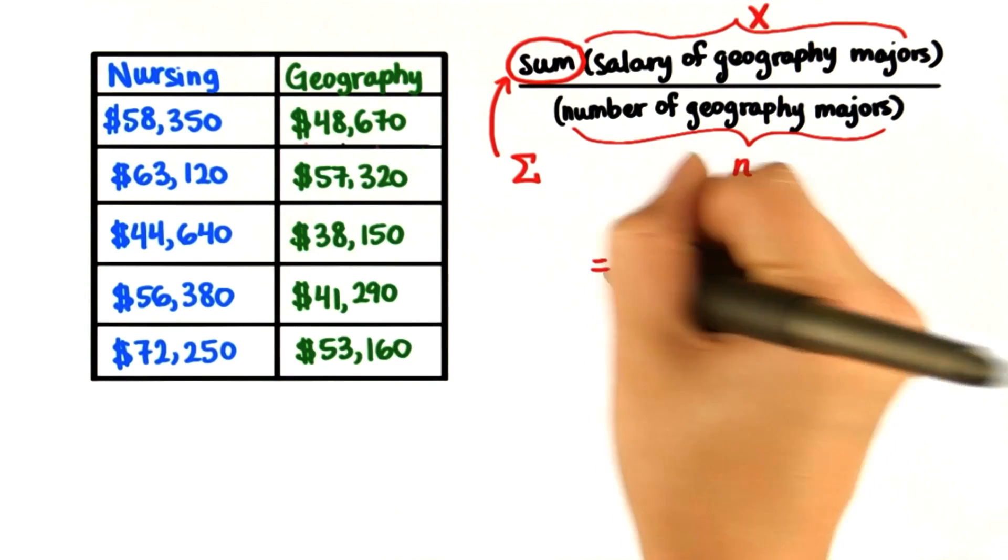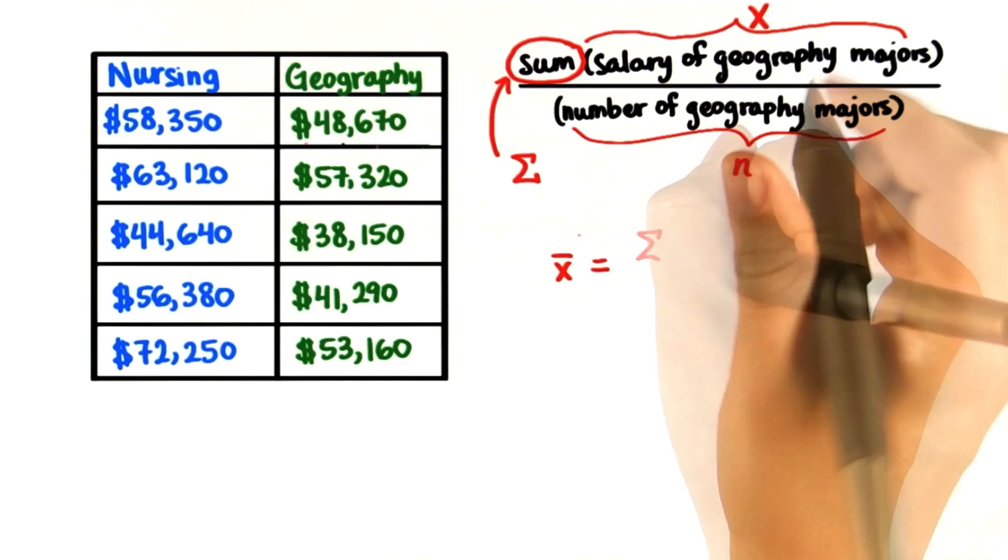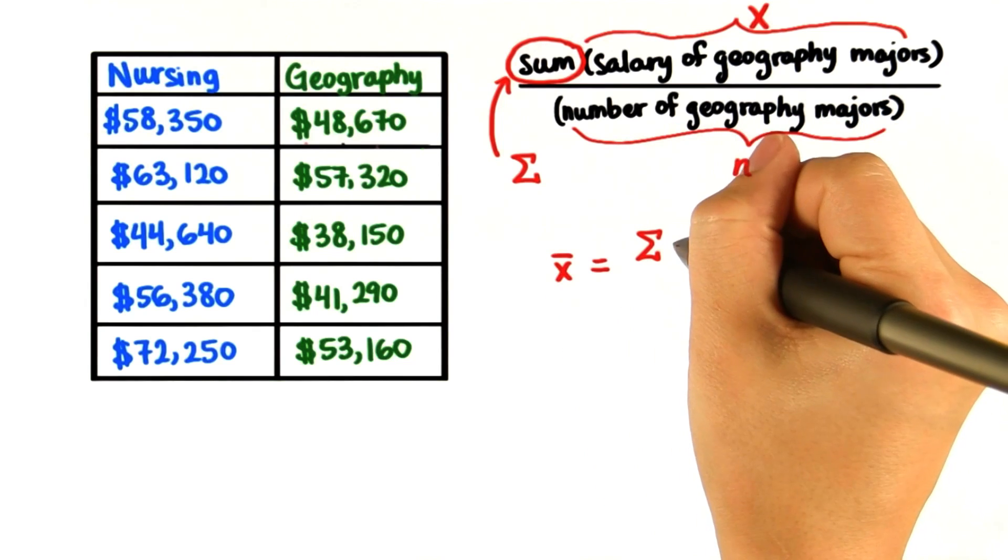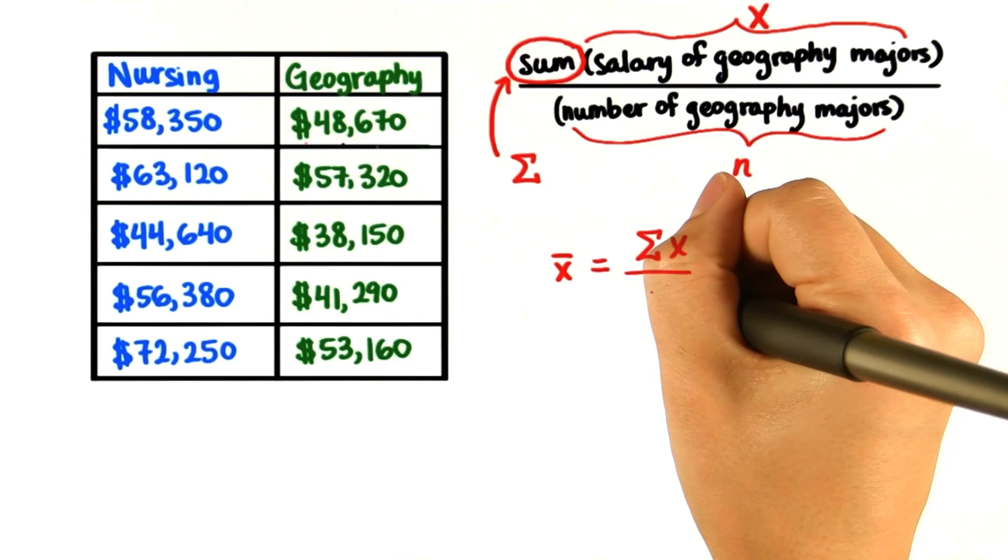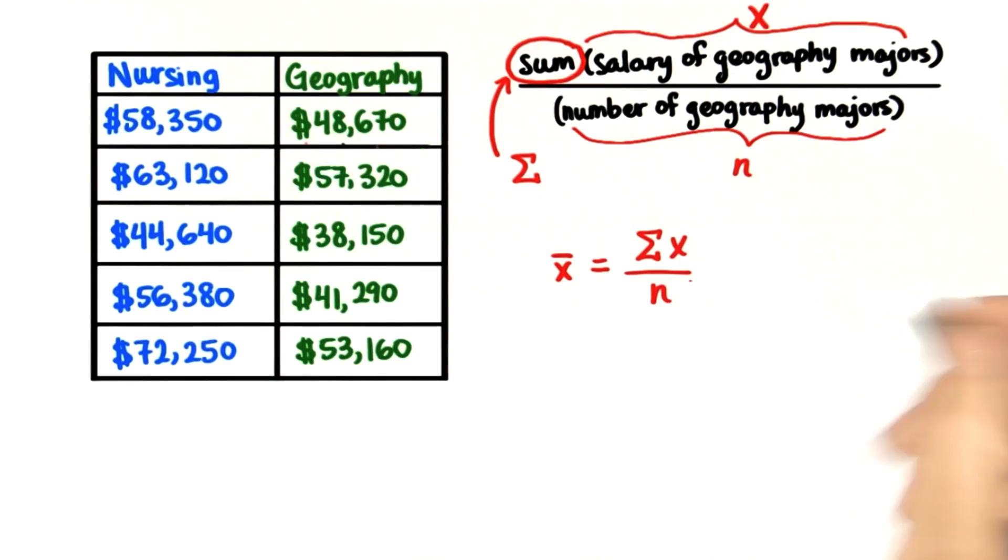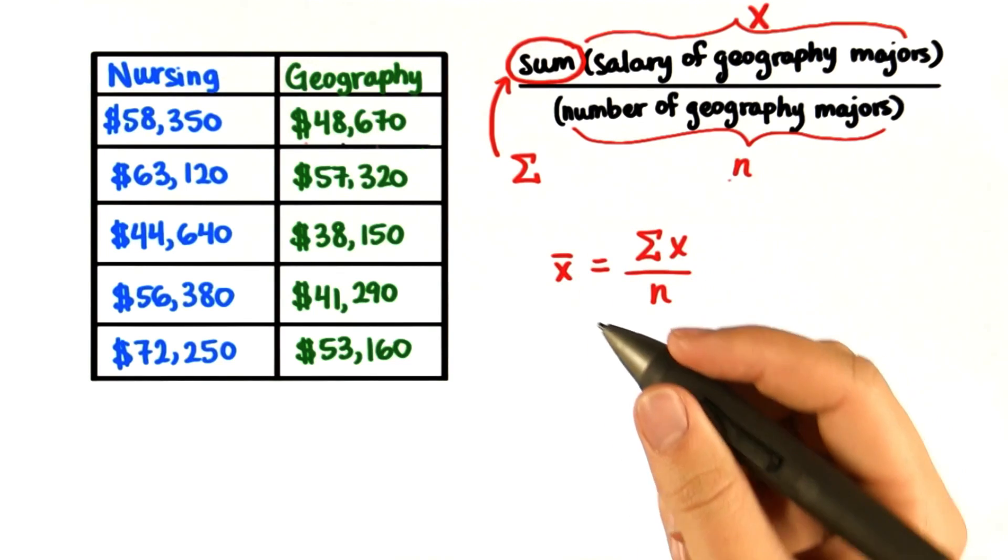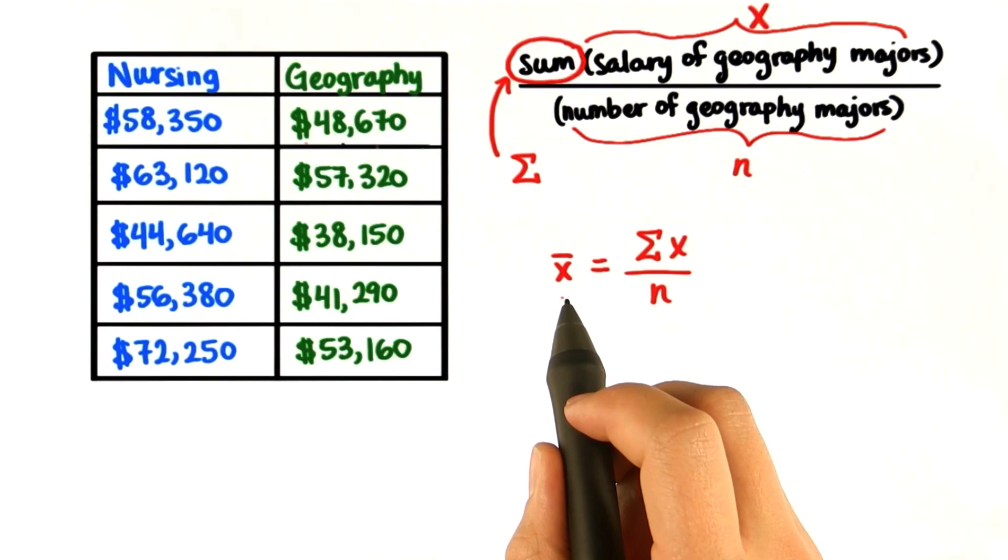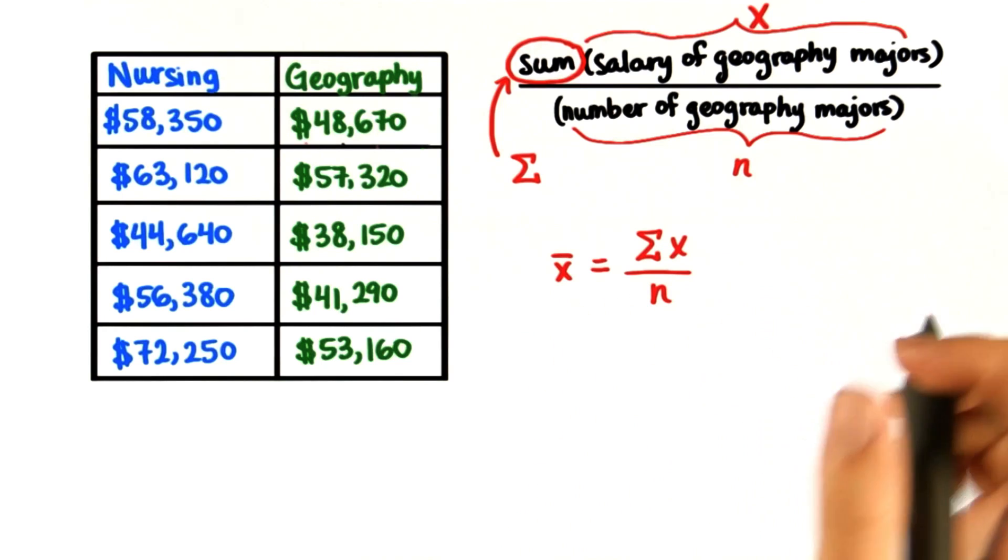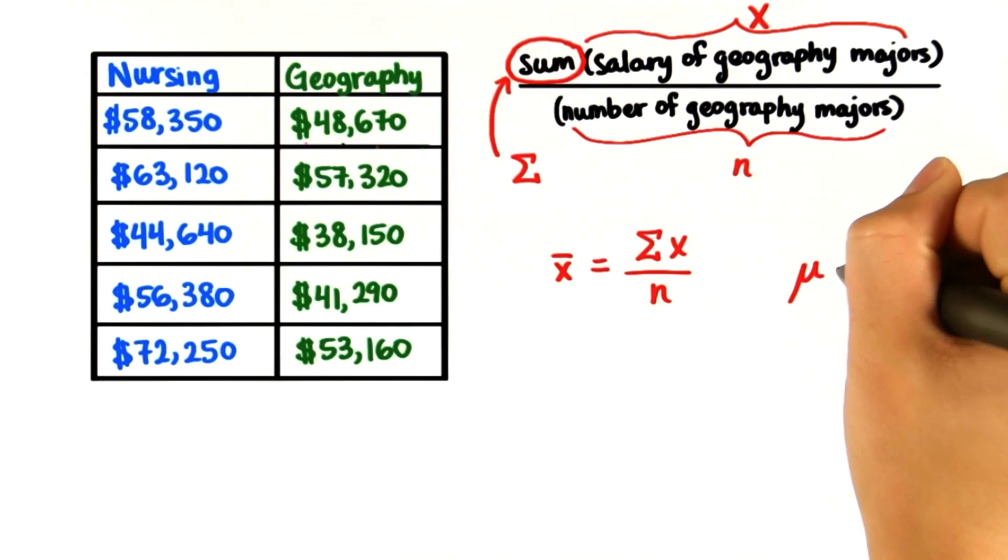So now we have a really nice formula for the mean. X bar equals the sum of x divided by n. Isn't that pretty? Now remember, this is for a sample. And you saw in lesson one that the sample statistic is denoted by x bar. For a population, we denote it by mu.